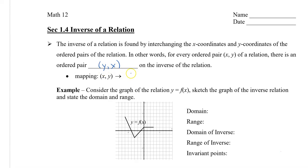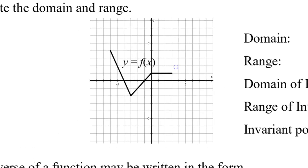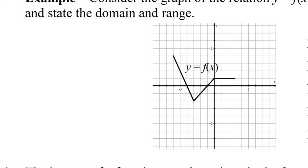The mapping notation will be the same — instead of (x, y), the coordinates become (y, x). Let's take a look at this example where I want to sketch the graph of the inverse, and then afterwards state the domain and range. To begin graphing, I'm first going to identify four points on my original graph. I pick the endpoints and then two points in the middle where they change direction — you want to pick every point where it does change direction.